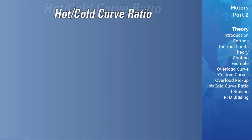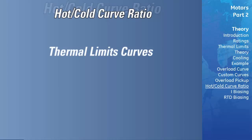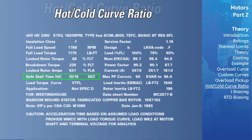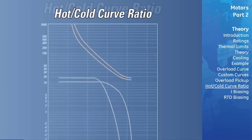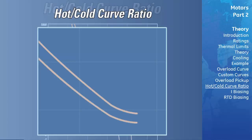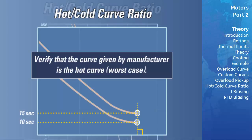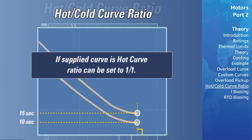Determining the Hot-Cold Curve Ratio. The hot-cold curve ratio can be determined from either the thermal limits curves, if provided, or from the hot and cold safe stall times. If hot and cold safe stall times are used, simply divide the hot safe stall time by the cold safe stall time. If the thermal limits curves are used, run a line perpendicular to the current axis that intersects the hot and cold curves at the stall point, draw a line from each intersection to the time axis, and record the corresponding times — in this case 10 and 15 seconds respectively. The hot-cold ratio equals 10 divided by 15, which equals 0.67. If only one curve is given, verify with the manufacturer that it is the hot curve; if so, the hot-cold ratio can be set to 1 to 1.